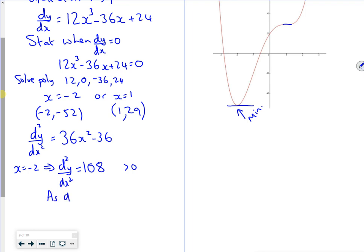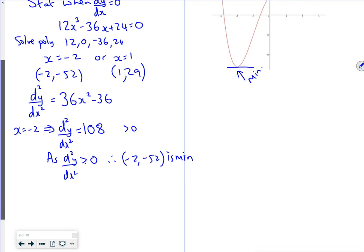As d²y/dx² is greater than 0 at x = -2, the point (-2, -52) is a minimum. That's fine, I know that one.